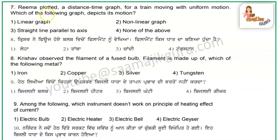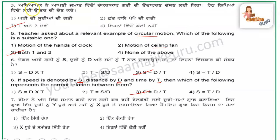Question number 7: Rima plotted a distance-time graph for a train moving with uniform motion. Which of the following graphs depicts its motion? For uniform motion, the distance-time graph is a straight line, so the answer is a linear graph.